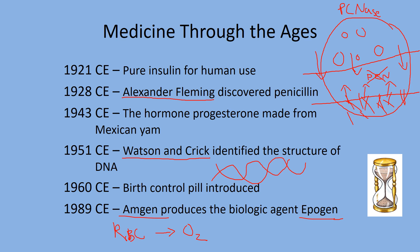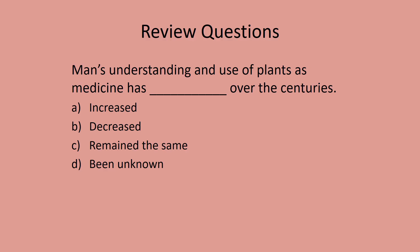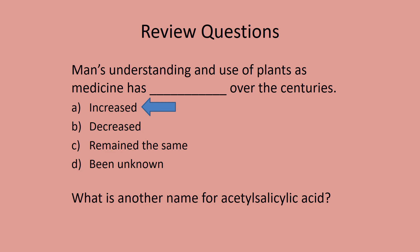Nowadays, many athletes have abused Epogen instead of training at altitude. Review question: man's understanding and use of plants as medicine has done what over the centuries? The answer is increased — and we're still learning. We just broke the code of DNA and now we're trying to learn how to read it. What's another name for acetylsalicylic acid? If you said aspirin or ASA, you'd be correct.